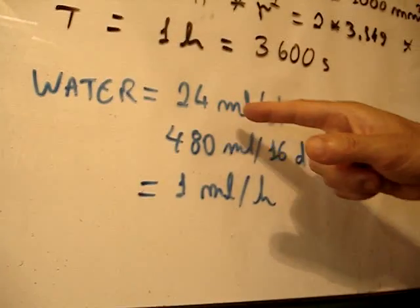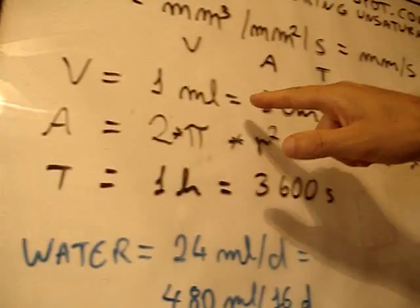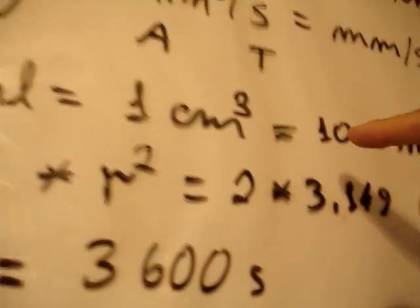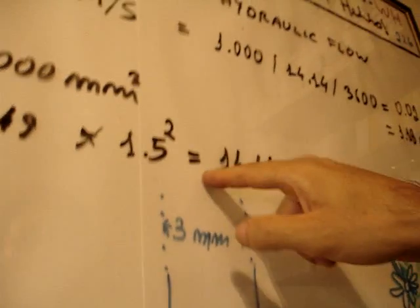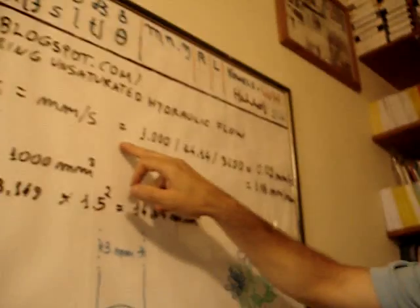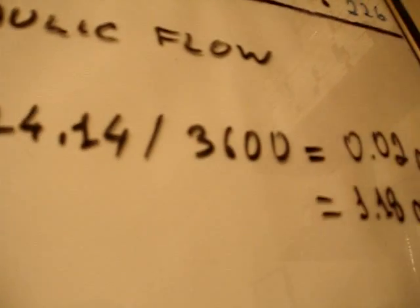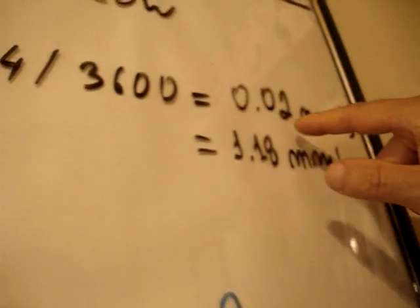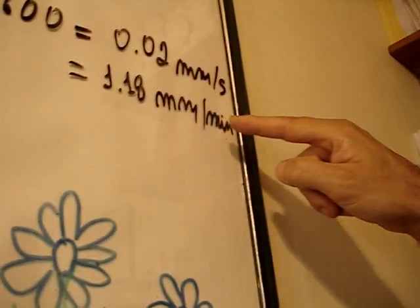We are going to assume 24 millimeters per day, or 480 ml per 16 days, which is 1 ml per hour. We have the volume 1 ml per hour, giving 1 cubic centimeter or 1,000 cubic millimeters. The area is 2 times pi times the radius squared: 2 times 3.14 times 1.5 squared, which equals 14.14 square millimeters. The time is 1 hour, or 3,600 seconds. The final hydraulic conductivity for this example is 1,000 cubic millimeters divided by 14.14 square millimeters divided by 3,600 seconds. The final result is 0.02 millimeters per second, the same as 1.18 millimeters per minute.